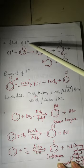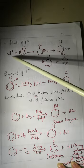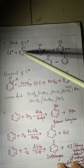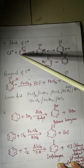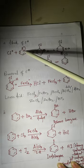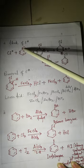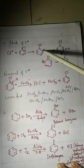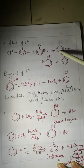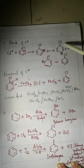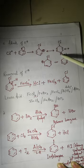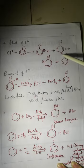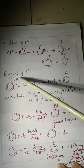Step two is the attack of the electrophile. The Cl+ ion attacks benzene. One of the double bonds in benzene breaks and donates electrons to the carbon attached to Cl+. This forms a carbocation intermediate with positive charge, and negative and positive charges appear at the ortho and para positions of the ring.